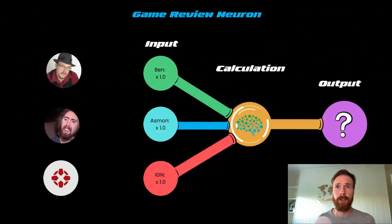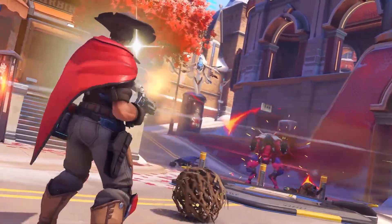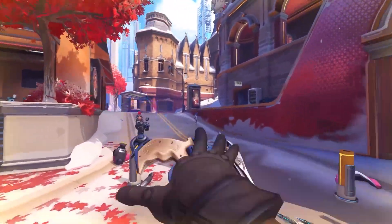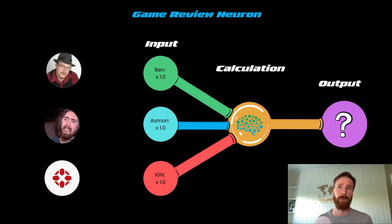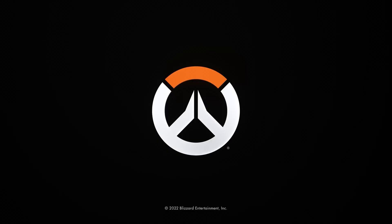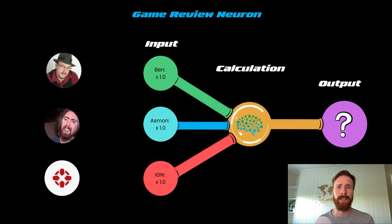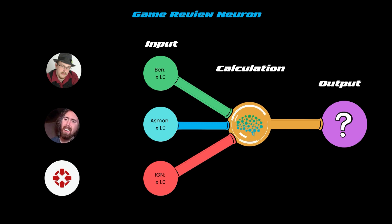To see how an artificial neural network works, let's build a video game critique system that uses video game critique reviews to guess how much a group of users will agree with them about a specific video game. So here are our three video game critics: we have Ben, Yahtzee, we have Asmongold, and IGN.